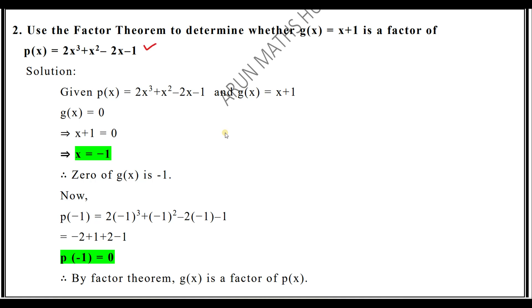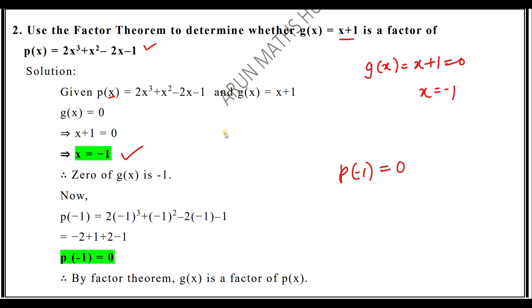The steps are similar. g(x) equals x plus 1; equate it to zero, so x equals minus 1. Now replace x by minus 1. If p(minus 1) equals zero, then g(x) is a factor. If p(minus 1) is not equal to zero, then g(x) is not a factor. Replace x by minus 1: p(minus 1) equals 2·(minus 1)³ plus (minus 1)² minus 2·(minus 1) minus 1.